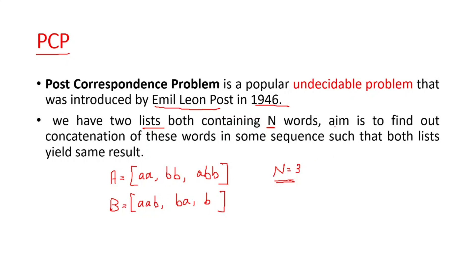Now what is our aim? The aim is to find the concatenation of these words in some sequence such that both lists yield the same result. The index values are 1, 2, and 3 for both lists. What I need to do is pick words by index from both lists — if I pick index 1 from A, I must pick the same index 1 from B — and make some comparison such that the result is equal.